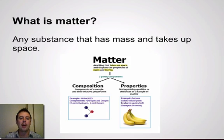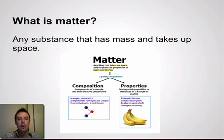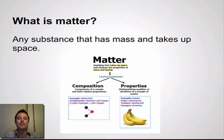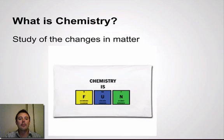First of all, we need to describe matter. Matter is any substance that has mass and takes up space. As you can see in the diagram, when we talk about matter there are two specific parts: its properties — the qualities or attributes of that sample — as well as its composition, meaning what is it made up of? Chemistry is actually the study of changes in matter.